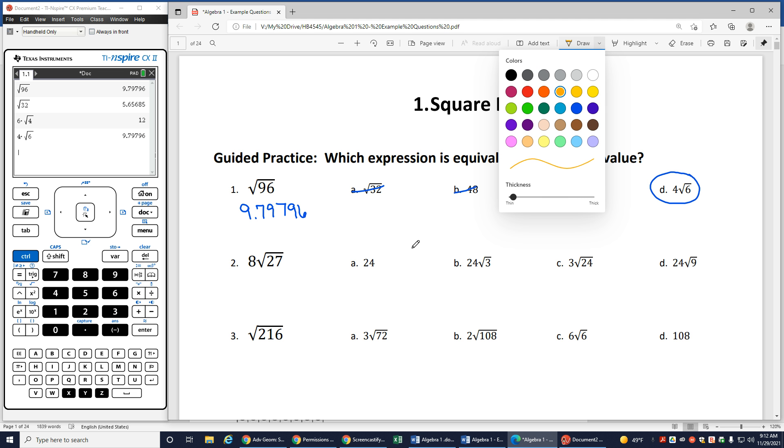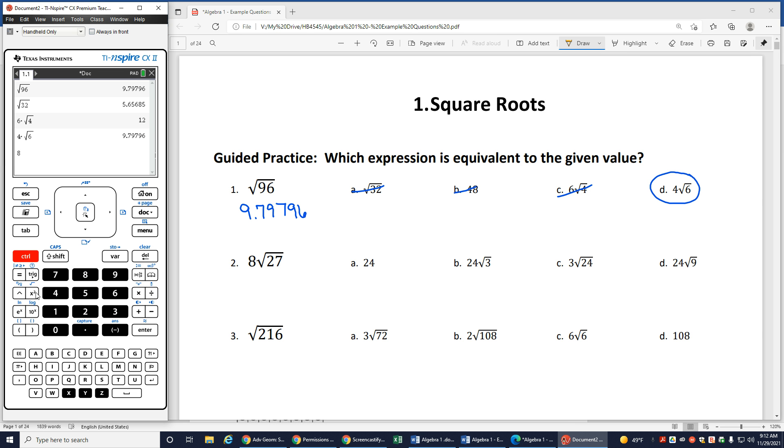Okay, let's look at another one. This next I have 8 square roots of 27, so 8 square root of 27 gives me 41.5692. I know it's not going to be just plain old 24, but what about 24 square roots of 3? That is, oh look, that's my answer. I don't have to look at the others. 24 square root of 3 and 8 square roots of 27 both give me the exact same answer.